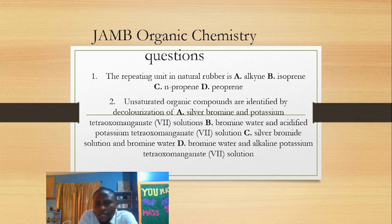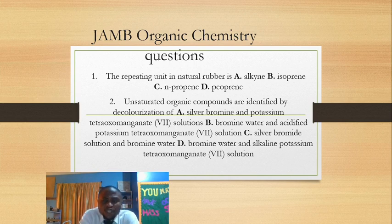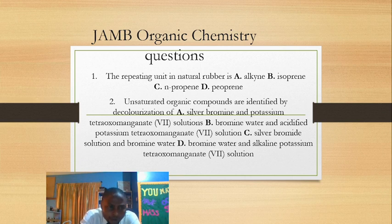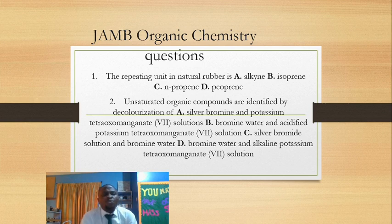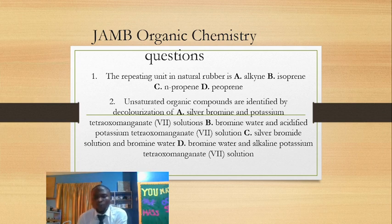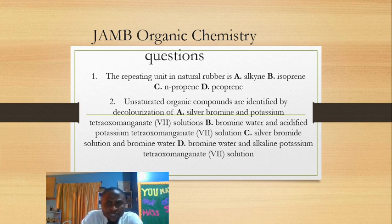The repeating unit in natural rubber is isoprene. The rubber that can be obtained from wood is a polymer, and the monomer — the simple unit that comes together to form multiple units we call polymers — is what we call isoprene.